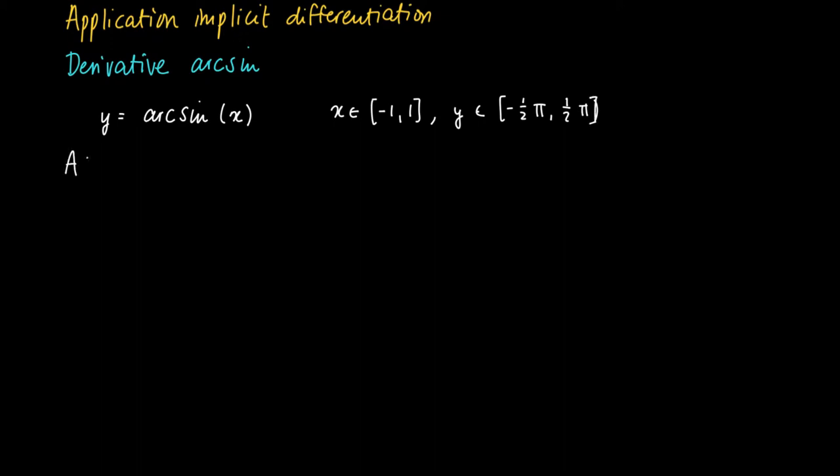Now we try to find the derivative of arcsine. First of all, we will assume that for all x in (-1, 1), we actually have a derivative, so that y'(x) exists. If so, then y is a differentiable function of x on the open interval (-1, 1).